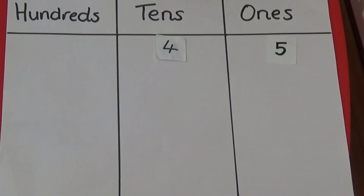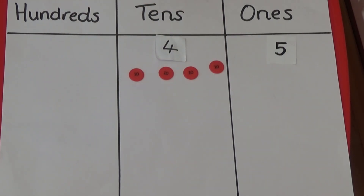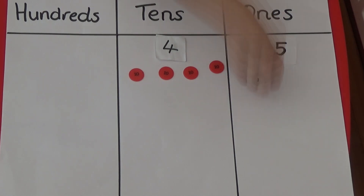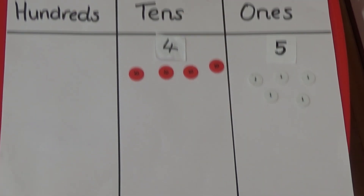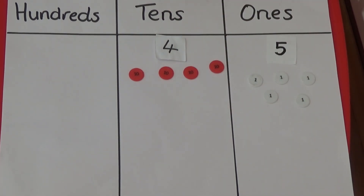Here the number is 45. I need four tens to represent the 40, and five ones to represent the ones. In this number, the 4 has a value of 40 because it is four tens.